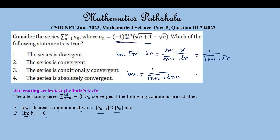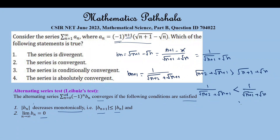Now, √(n+2) + √(n+1) is greater than √(n+1) + √n. So 1 / (√(n+2) + √(n+1)) will be less than 1 / (√(n+1) + √n) for all n. Therefore b_{n+1} < b_n, so condition one is satisfied.